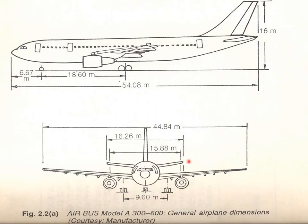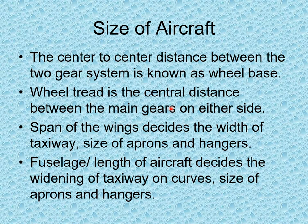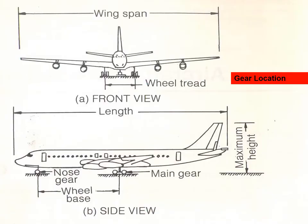An example is shown with Airbus A300 dimensions. Wheelbase is the center-to-center distance between the nose and main gear systems. Wheel tread is the lateral distance between the main gears. Wingspan decides the widths of taxiways, size of aprons, and hangars.